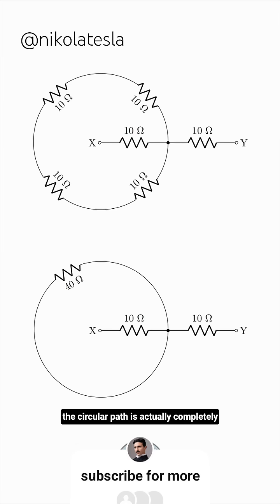The circular path is actually completely useless. If there was a voltage source driving current flow from X to Y, then the current leaving terminal X will reach terminal Y in its entirety, and the circular path is completely redundant.